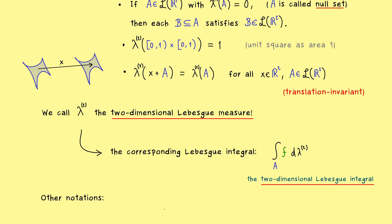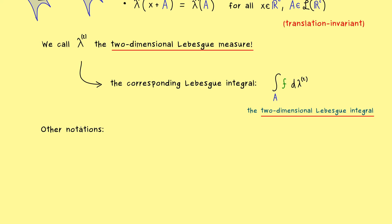And as you might already know, there are a lot of other notations one can use to write this integral. For example, often we need a variable name and then we write f of x and the lambda 2 of x. And please note, here x stands for a point in R2.